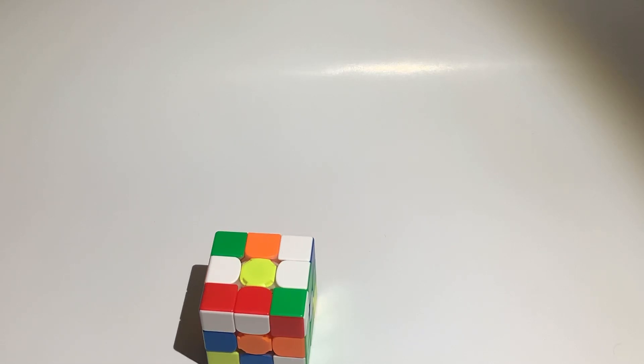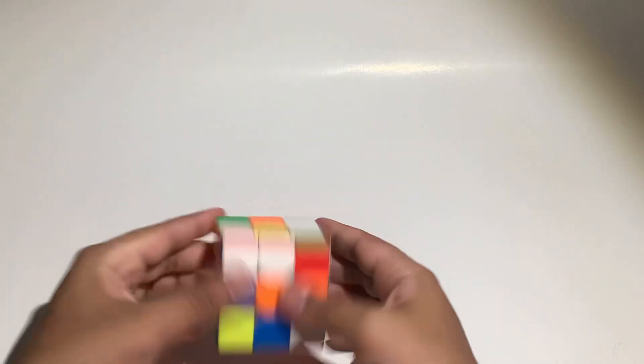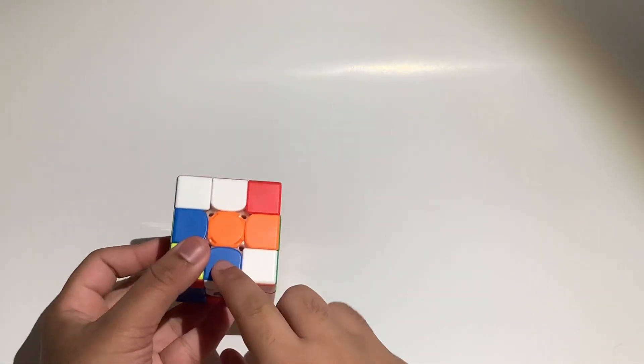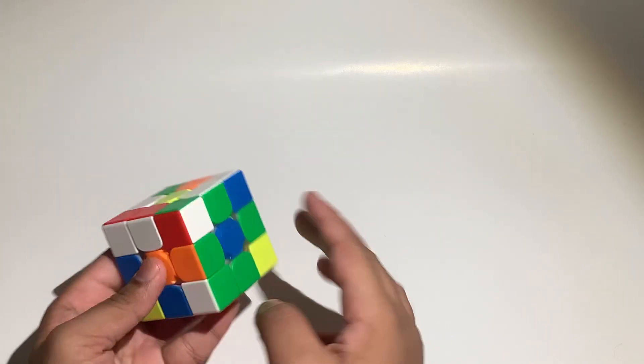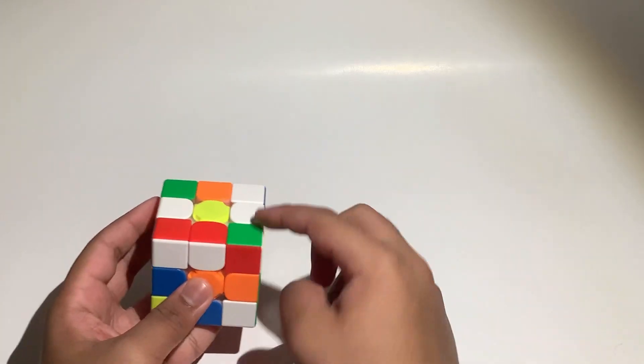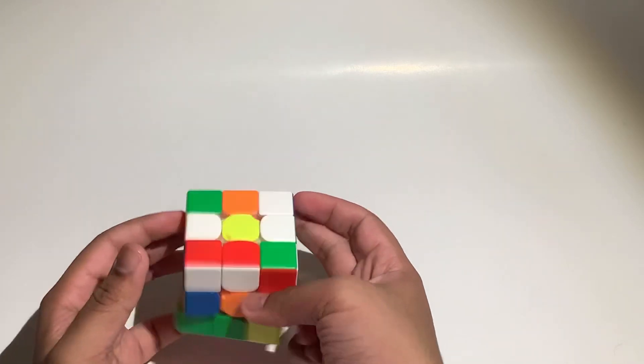So this is going to be an advanced walkthrough solve and the scramble is in the description. Let's get into it right away. I see blue cross piece here with green adjacent on its opposite, and red could be set up to go down here, so I'll just do a D'.